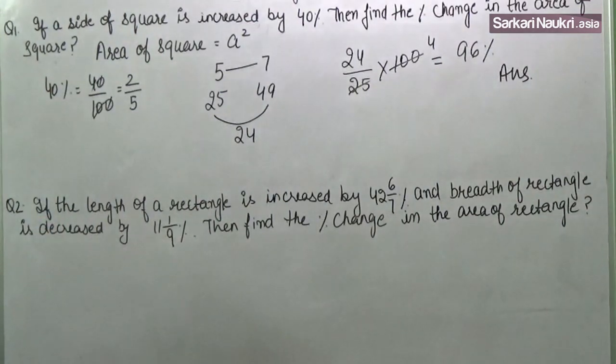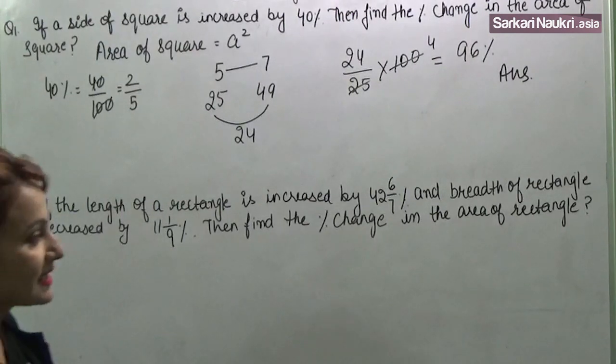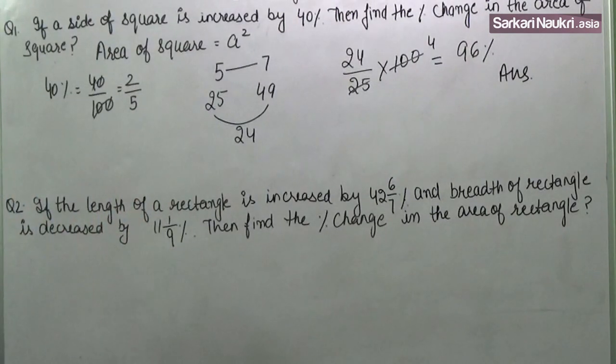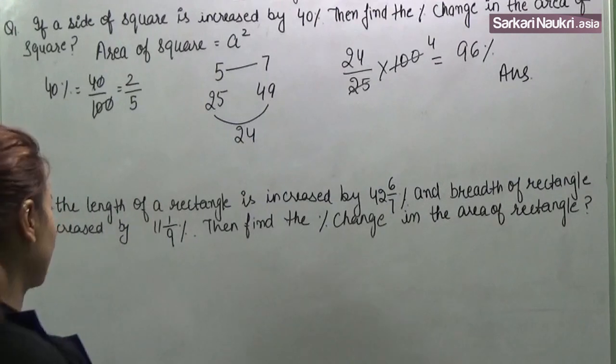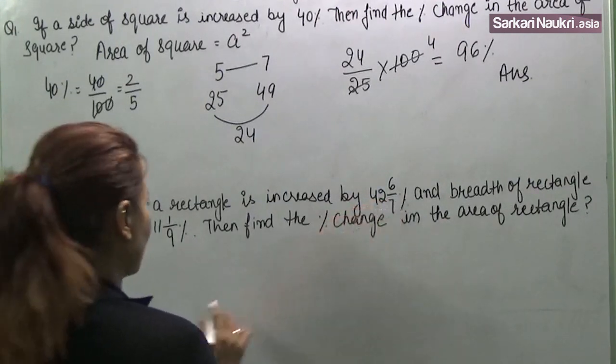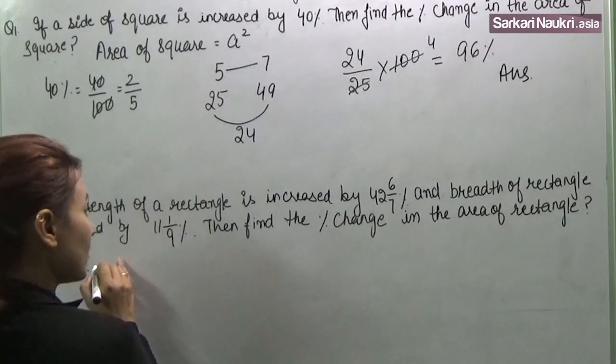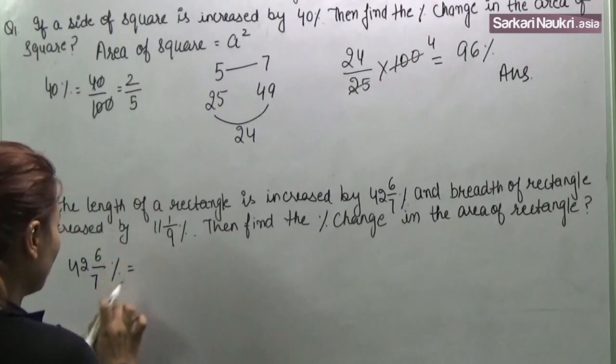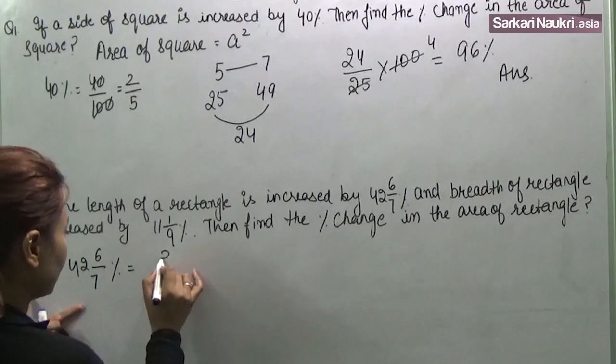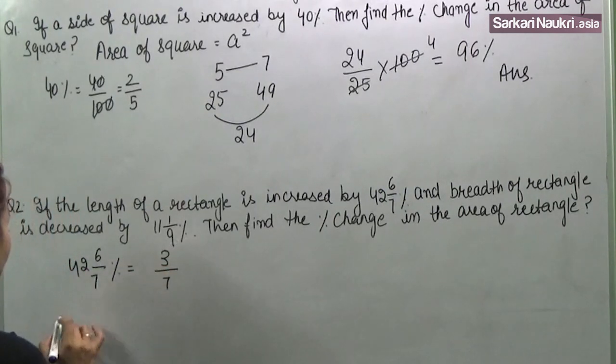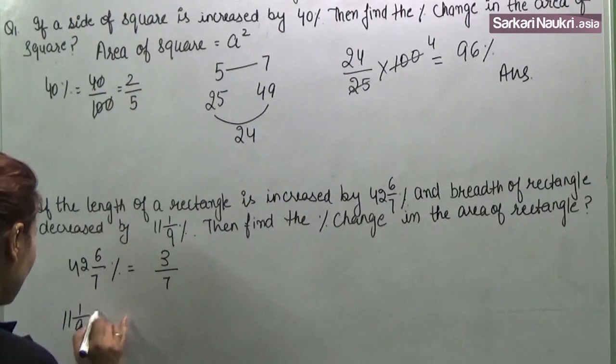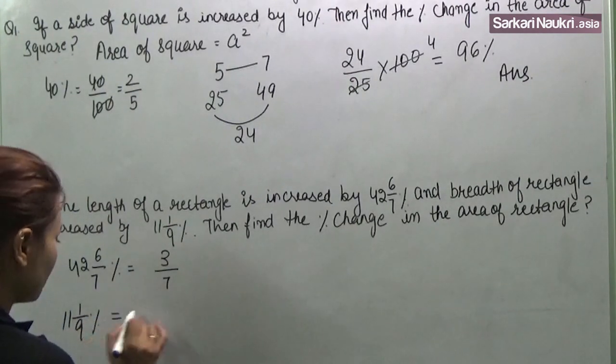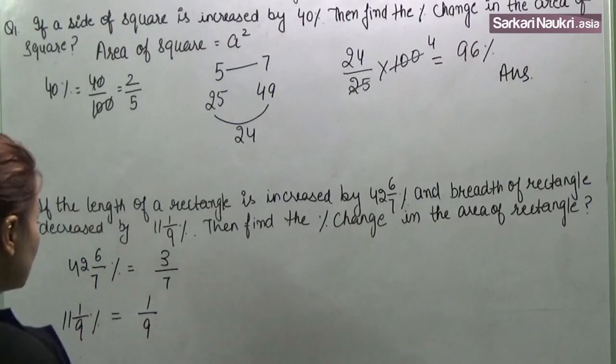Second question is, if the length of a rectangle is increased by 42 and 6 by 7 percent and the breadth of rectangle is decreased by 11 and 1 by 9, then find the percent change in the area of rectangle. So 42 and 6 by 7 percent, when we solve this, we will get 3 by 7.